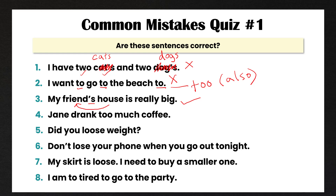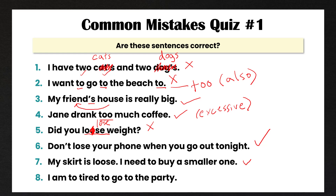Number four, Jane drank too much coffee, is also correct — too here means an excessive amount; Jane drank more coffee than she should have. Number five is incorrect: did you loose weight? Remember, loose is an adjective and we need a verb — lose with one O: did you lose weight? Number six is correct: don't lose your phone when you go out tonight. Number seven is also correct: my skirt is loose, I need to buy a smaller one — loose is an adjective describing the skirt, which is too big.